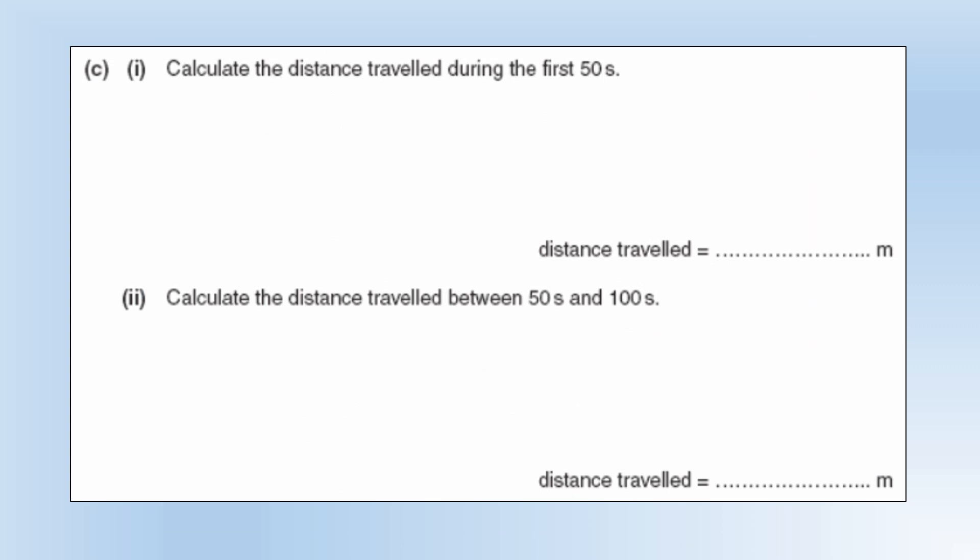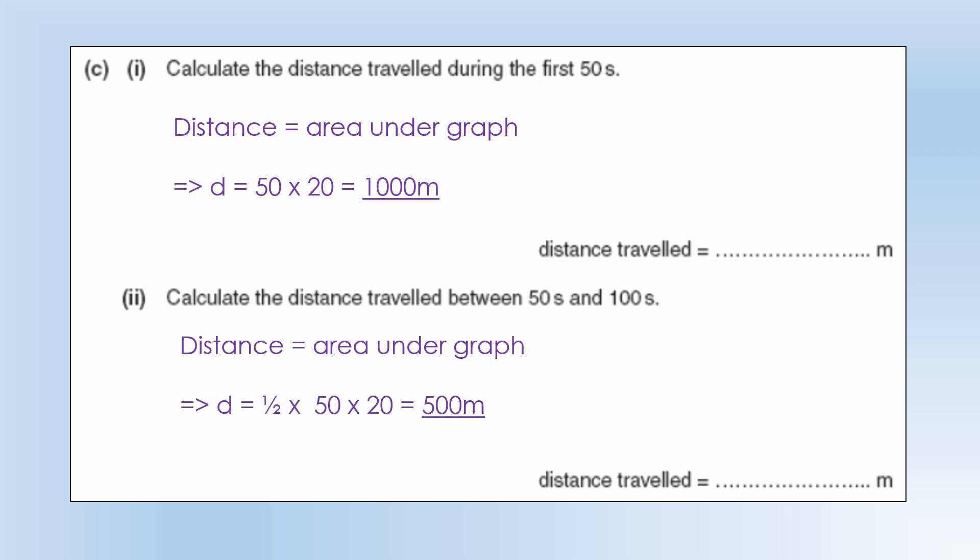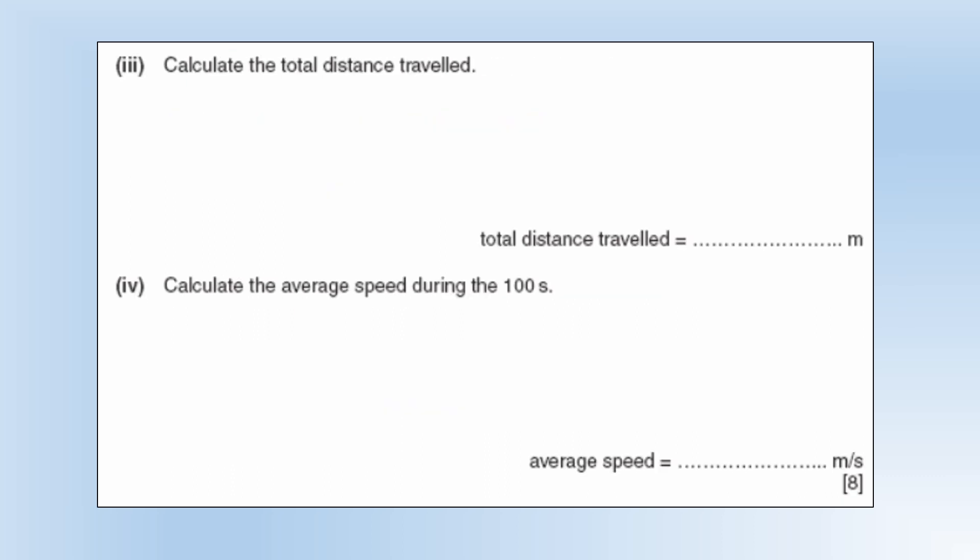Calculate the distance traveled during the first 50 seconds. Distance is the area under a speed versus time graph. Up to 50 seconds that's just a rectangle so we do 50 times 20. The distance traveled between 50 and 100 is a triangle, so we're going to use half times base times height to get its area. That comes out as 500 meters. To get the total distance we add those two together, that's 1500 meters.